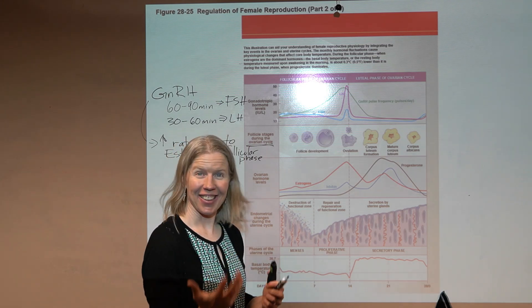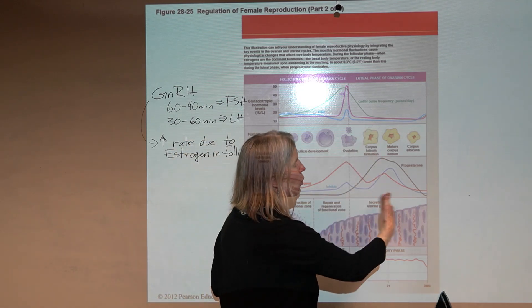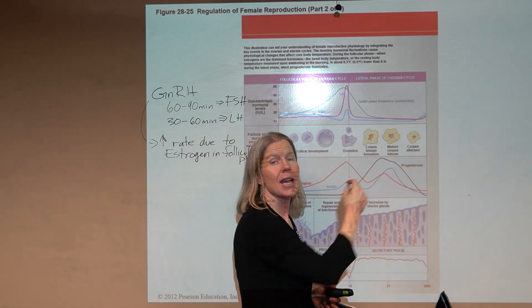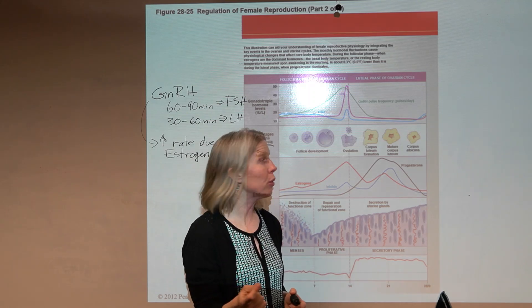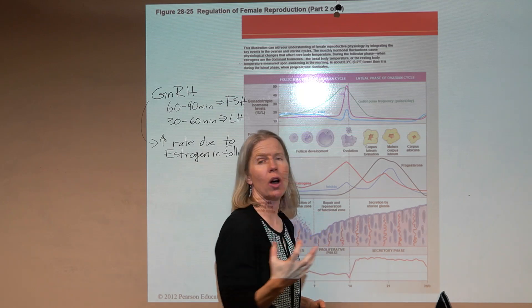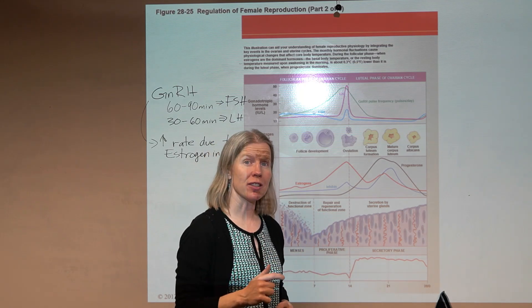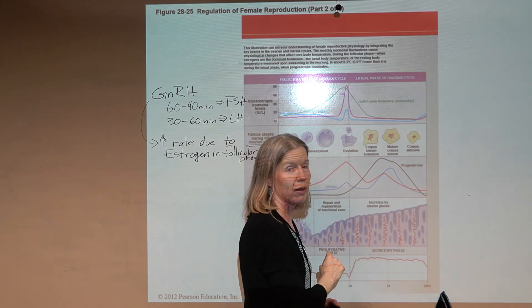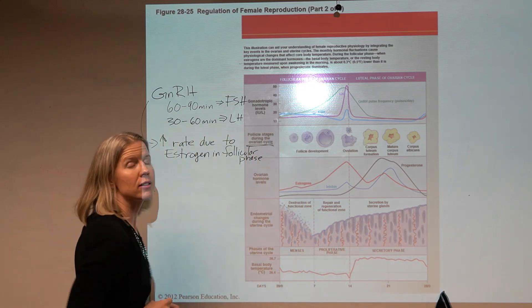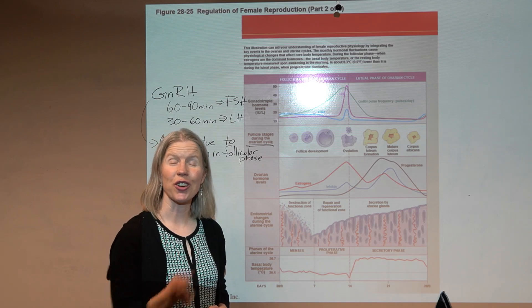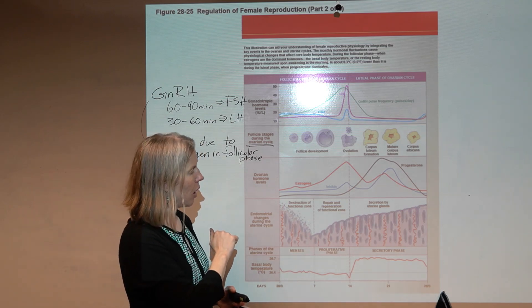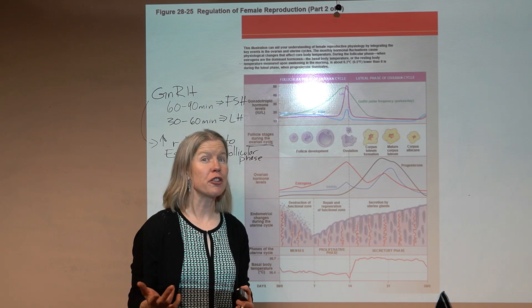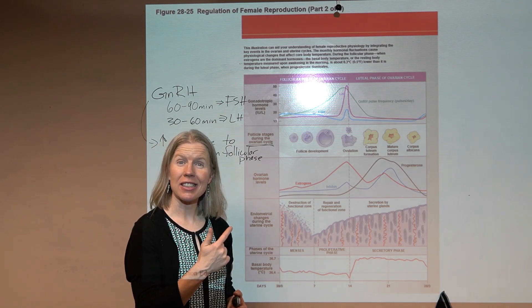High progesterone levels cause secretion from the uterine glands during the secretory phase. At the end of the cycle, what matters is what happens to the corpus luteum: if fertilization occurs, the corpus luteum is maintained, progesterone stays high, and the uterine lining is retained. If there's no fertilization, the corpus luteum scars over to the corpus albicans, progesterone drops, the uterine lining is lost, and the cycle starts over. Take a moment to appreciate how complex this all is.